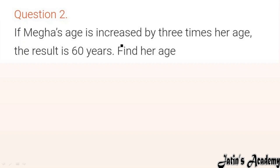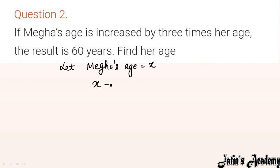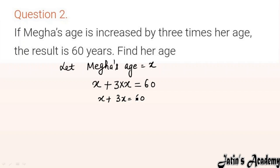Question 2: The result is 60 years if Megha's age is increased by 3 times her age. Let Megha's age be x years. So x plus 3 times x equals 60, giving x plus 3x equals 4x equals 60. Dividing both sides by 4, x equals 60 by 4, so x equals 15 years.